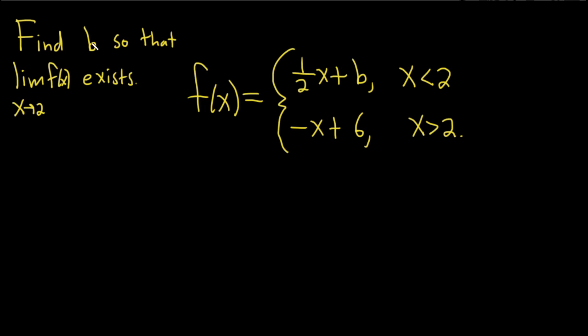In this problem, we have to find the value of b so that the limit as x approaches 2 of f of x exists. So we want to find b so that this limit actually exists.